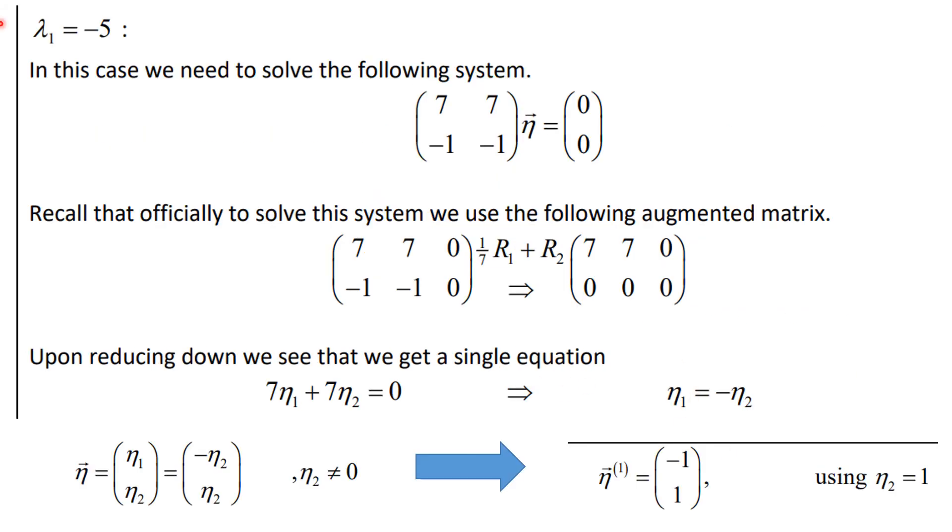Okay, so here we go. I put lambda equal minus 5 into that A minus lambda I equation and I'm taking it times eta and I get the zero vector. Now if you look at that and think about matrix multiplication, that means we're saying that 7 times eta 1 plus 7 times eta 2 is equal to zero. That means that eta 1 is equal to minus eta 2. So we have this, but eta 1 was equal to minus eta 2, so we have that. And we want to put this in simplest form, so I'm going to take eta 2 to be 1, and that is the eigenvector. So for the first one, this is the eigenvector for lambda equal minus 5.